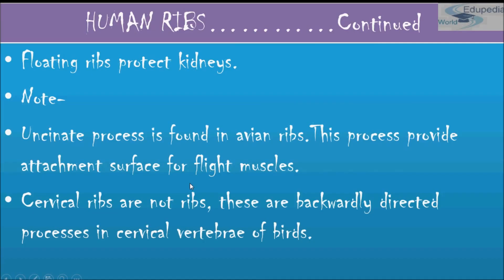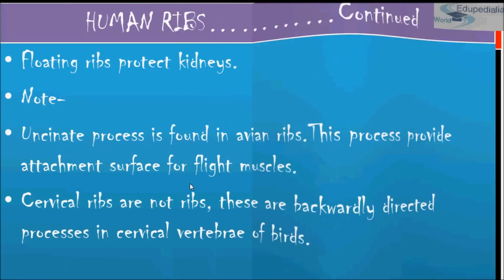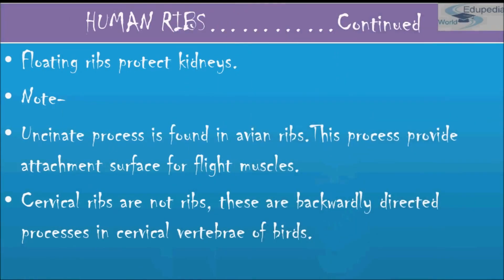The uncinate process is found in avian ribs — the ribs of birds — and provides an attachment surface for flight muscles. Cervical ribs are not true ribs; they are backwardly directed processes on the cervical vertebrae of birds.